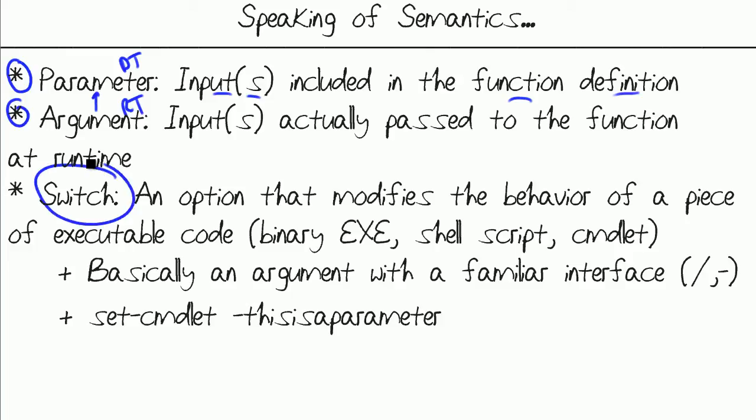That having been said, I found very little on exactly what a switch is. We take it for granted, and this goes back to Unix Linux. We're not even constraining ourselves to Windows or OS X, which of course recurses back to Unix. My understanding of a switch is that this is an option that modifies the behavior of a piece of executable code at runtime, similar to an argument. So this could be a binary executable, it could be a shell script, it could be a PowerShell cmdlet.